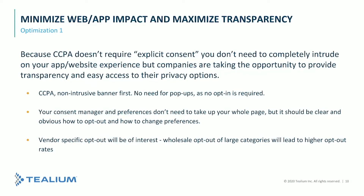The five ways to optimize consent management are based on experience working within GDPR for the last year and a half, guiding three major companies through that process. Let's start with the first one: minimize web or app impact and maximize transparency. This is connected to the fact that GDPR is opt-in driven and CCPA is opt-out driven. With CCPA, users can select a 'do not sell my data' option, which opts them out — and there is simply no need for an intrusive pop-up.